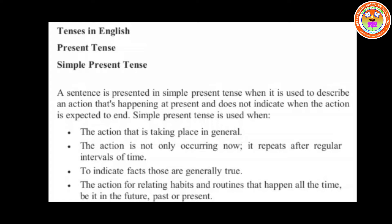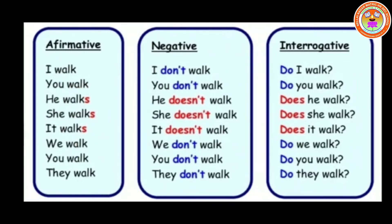The action being taken at that right time — that is what present tense is. Any tense or any sentence can be written in three forms: affirmative, negative, and interrogative. I have given you the conjugation of the verb 'walk' in affirmative, negative, and interrogative forms. The verb 'walk' takes an 'S' particularly in the affirmative when it comes to the third person singular.